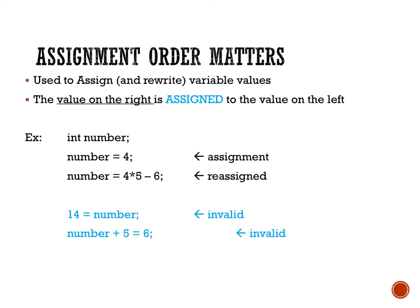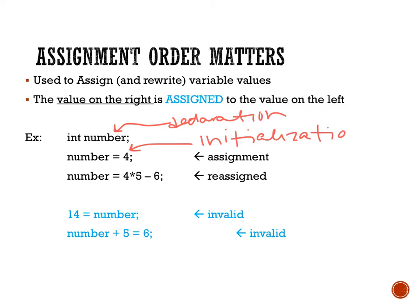There are a couple of valid and invalid statements that are common when students haven't programmed much. So here we have our declaration — we talked about that in a previous video. Then here is our initialization, where the variable was originally assigned a number. And then here you can see that a reassignment is taking place. We are taking 4 times 5 minus 6 on the right-hand side, calculating that number, and saving the value 14 inside the variable called number.